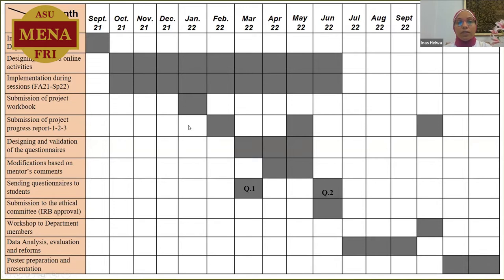In January, I submitted the first project workbook, which was very useful for me to arrange and organize my thoughts and have a clear framework of my project. I also submitted the project progress report one in February, which further organized the project. In May, that was the second progress report. During March, April, and May, I was working on the design and validation of the questionnaire, including a review of literature and meetings with my advisor.